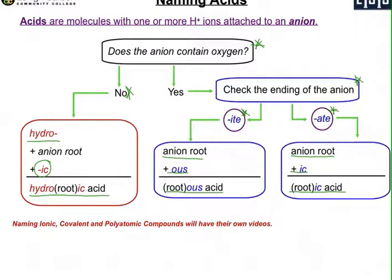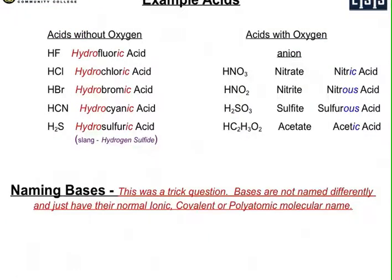Let me show you some examples. If you don't have oxygen, first one is HF. The root here is fluorine, so you've got hydrofluoric acid. The next one is HCl, chlorine. That root is chlor, so you have hydrochloric acid.